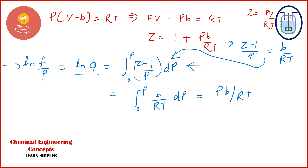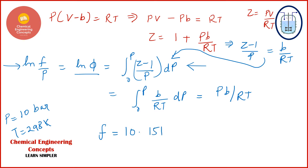Now we just substitute the values: pressure = 10 bar, temperature = 298 K. Substituting these values gives the fugacity f = 10.151 bar. The units are bar because pressure was given in bar.